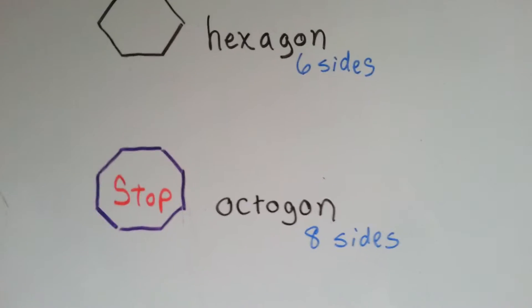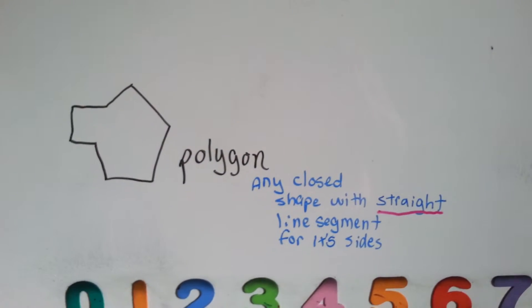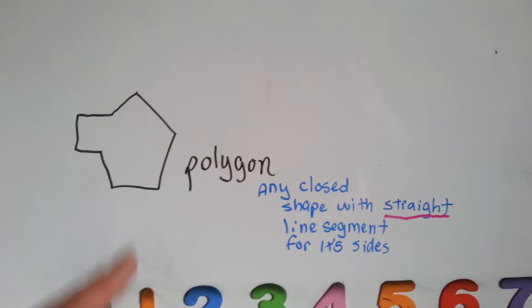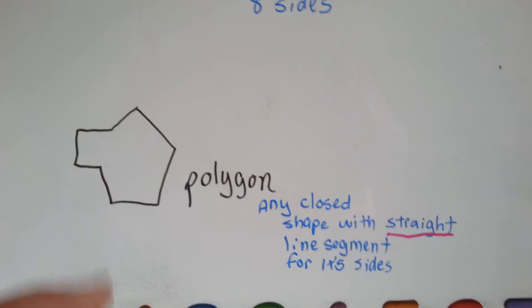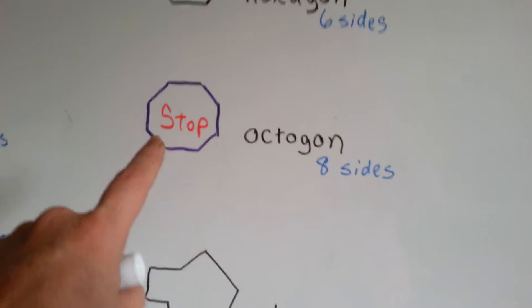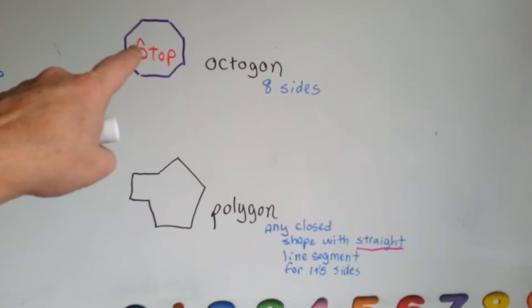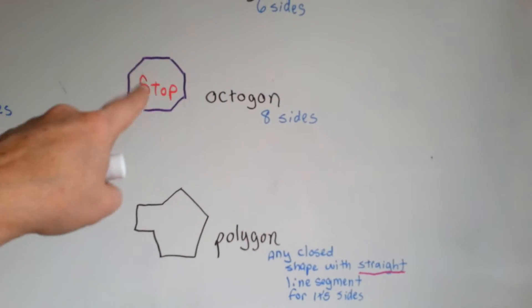A polygon is any closed shape with straight line segments for its sides. So, an octagon is a polygon because it's a closed shape that has straight line segments for its sides.